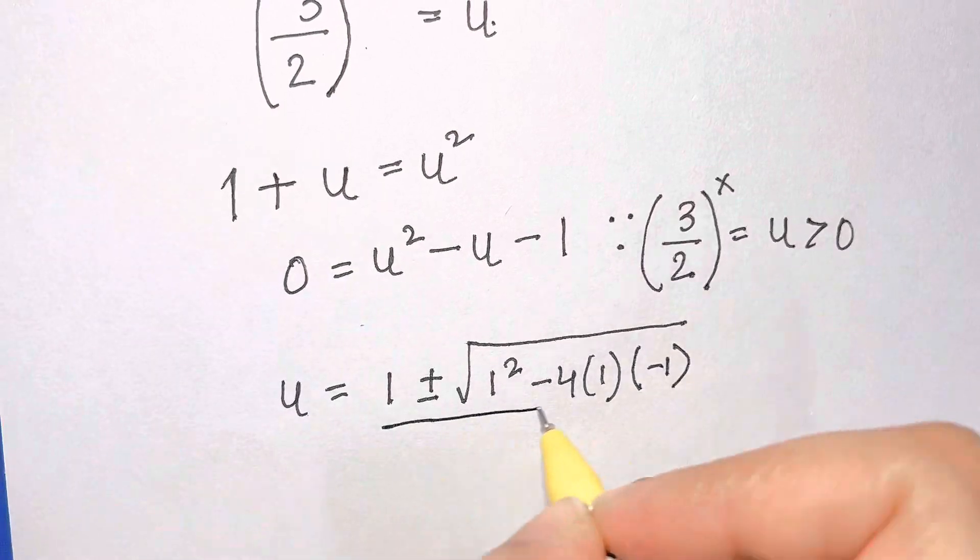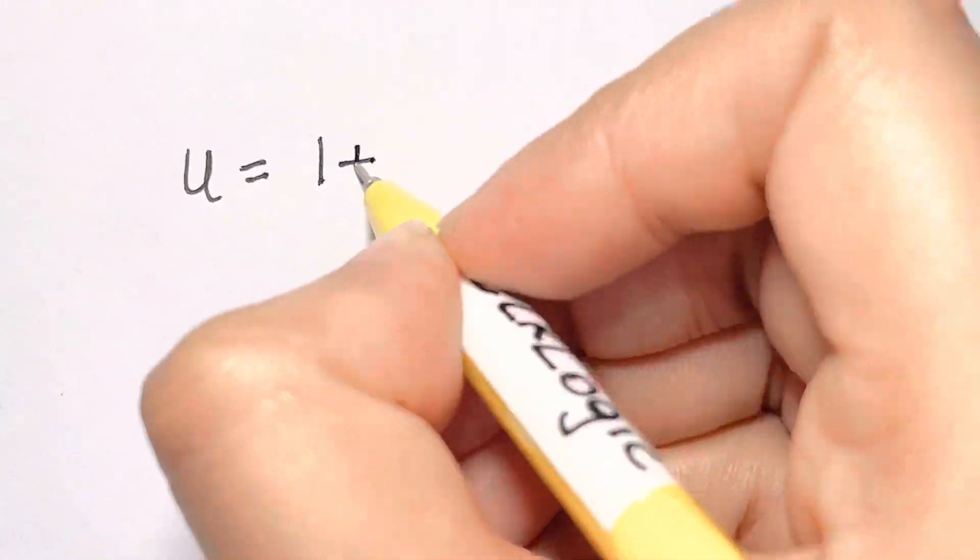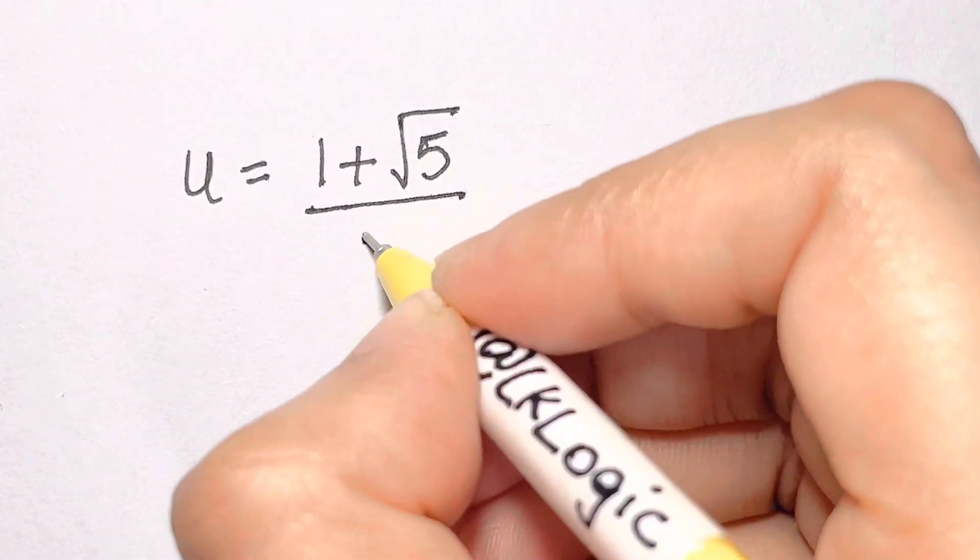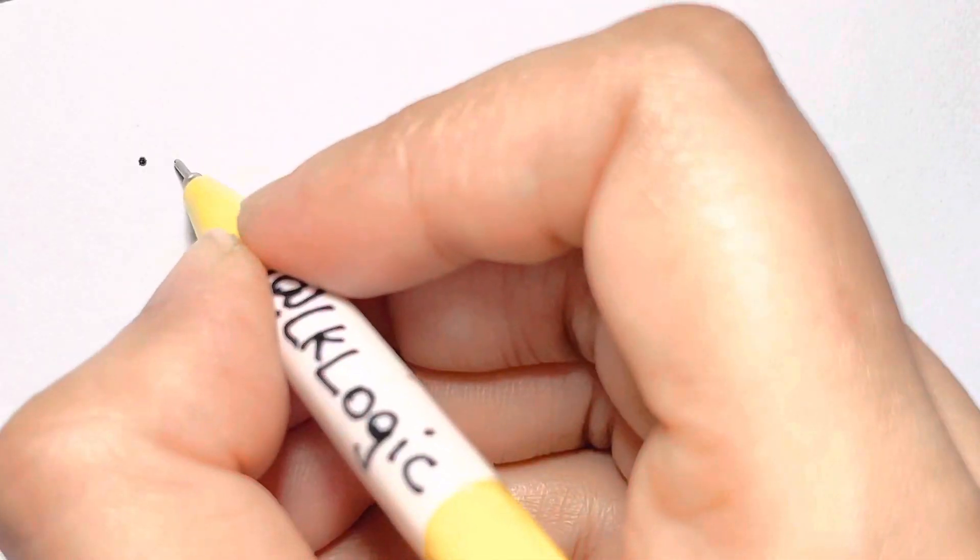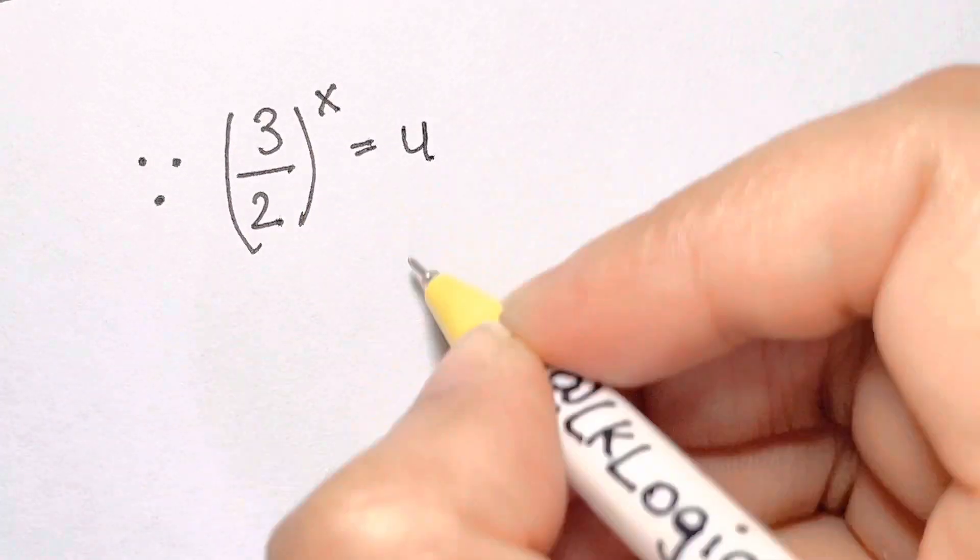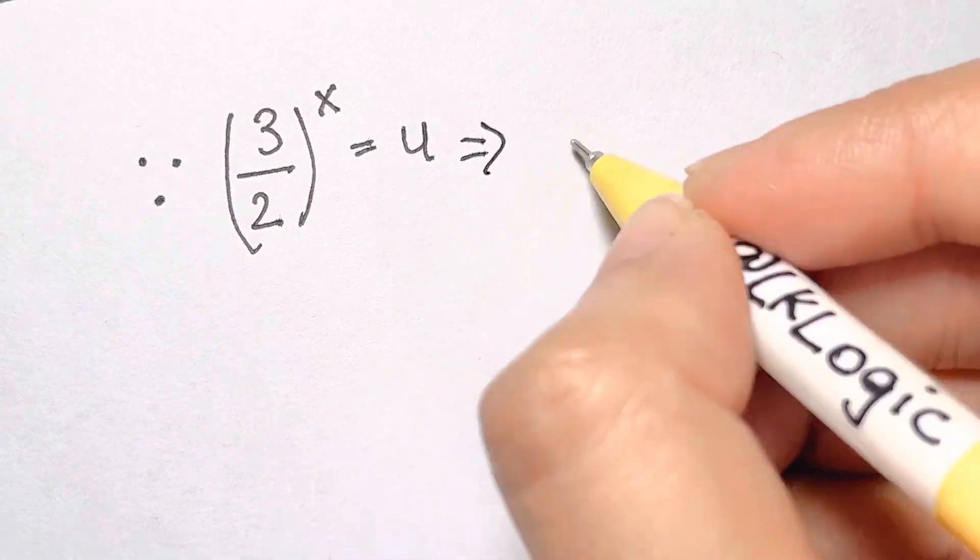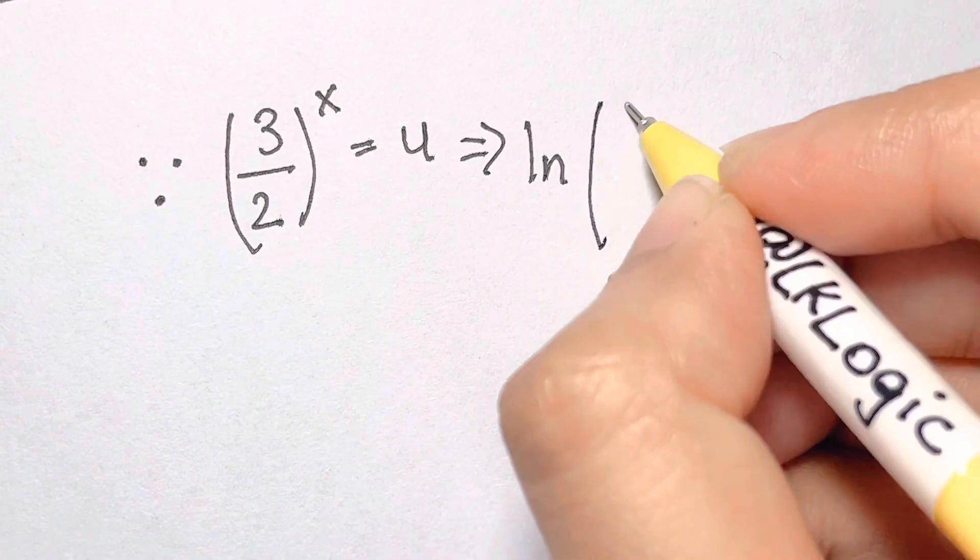We get u equals the golden ratio: 1 plus square root 5 all over 2. But we are not done yet. We want to solve for x. Since 3 over 2 to the power of x equals u, we want to solve for x by taking the natural log on both sides.